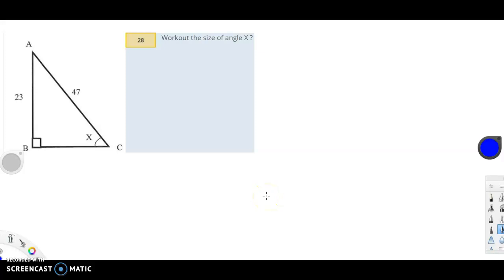Now, 28, work out the size of angle X. Well, first of all, this is a right-angled triangle. That's 90 degrees there. And because it's a right-angled triangle, sine, cos, and tan can be options. Right? So, they can be options for sure.